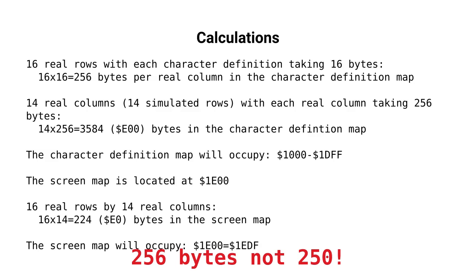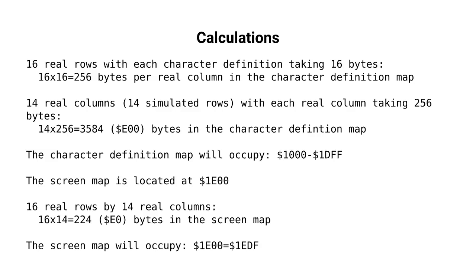If we've got 14 simulated rows — or 14 real columns — then that would be 14 × 256 = 3,584 bytes, which would be E00 hex in the character definition map.